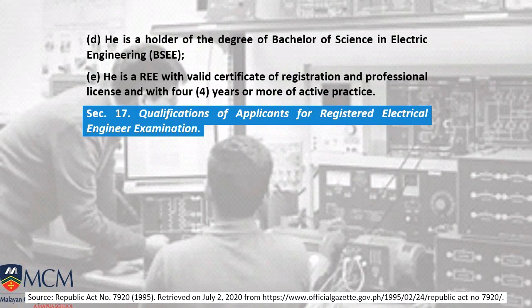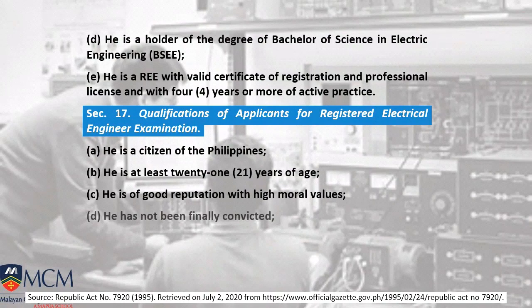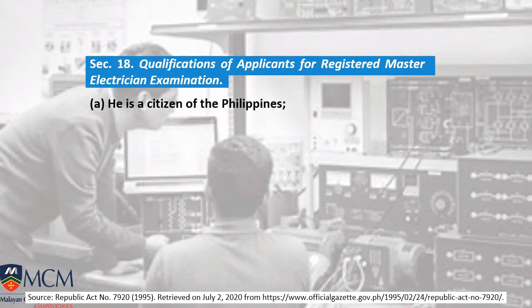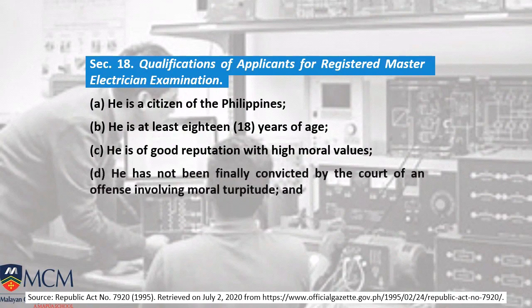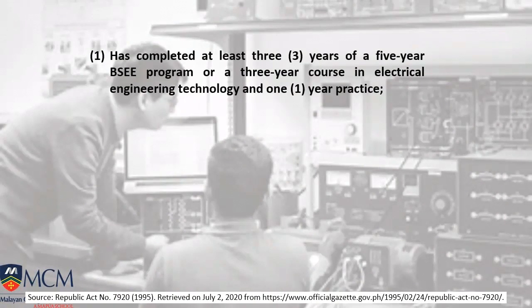Section 17 covers qualifications of applicants for Registered Electrical Engineer examination — this is where you belong. You must be a citizen, at least 21 years of age, with no illegal records, and must be a holder of a Bachelor of Science in Electrical Engineering degree or a registered Master of Electrician. For technical backgrounds, Part 1 requires at least 3 years of a 5-year BSEE program or a 3-year course in Electrical Engineering Technology with 1 year of practice — validated by a Professional Electrical Engineer.